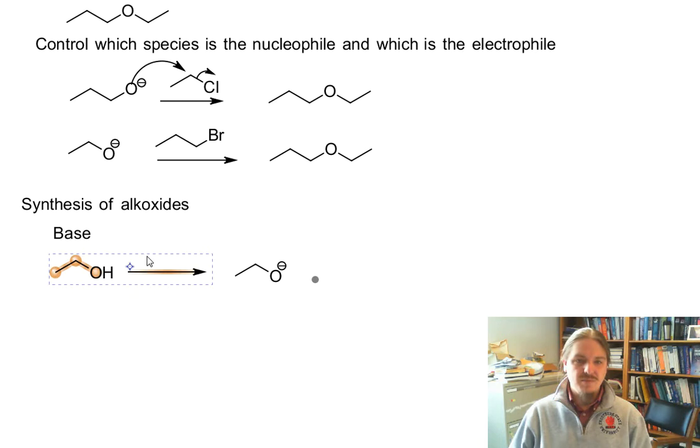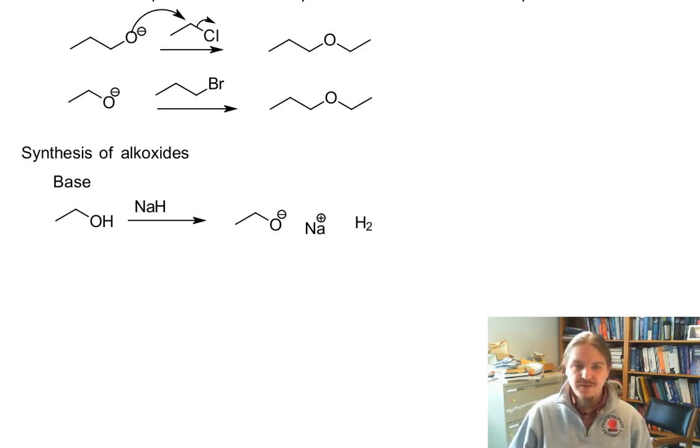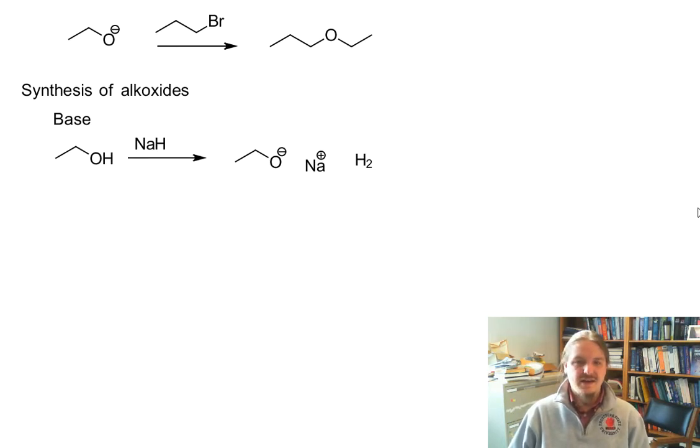And one popular base is to use sodium hydride because the other product from the reaction of sodium hydride is hydrogen gas, which is volatile and bubbles out of the solution as it's formed. So certainly other bases can and have been used, and we generate our sodium ethoxide.